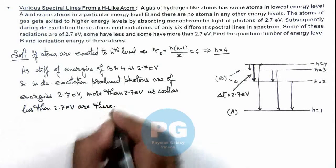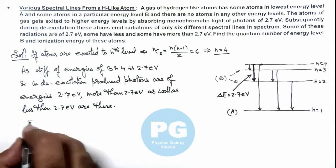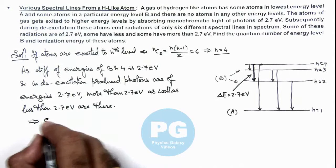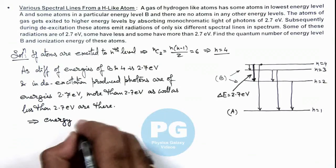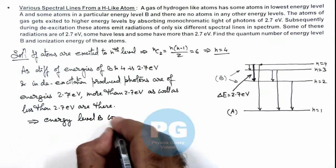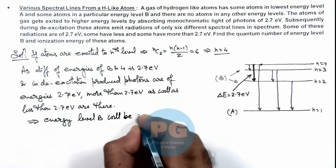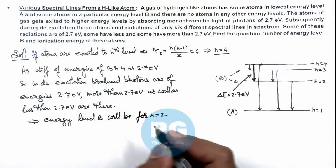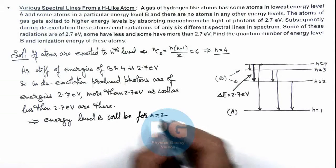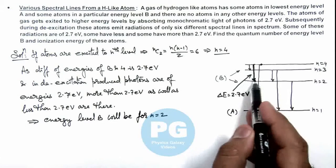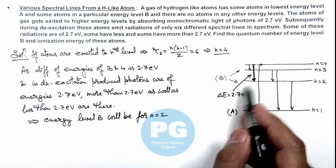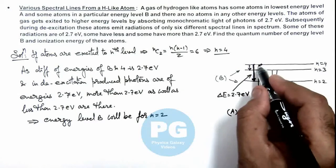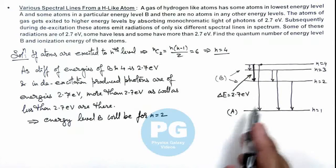This implies we can directly state that energy level B will be for n is equal to 2. Because if it is n equal to 2, then 4 to 2 will be corresponding to 2.7 electron volts, and less than this as well as more than this both energies are available over here.